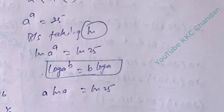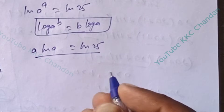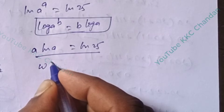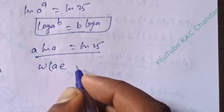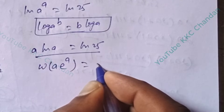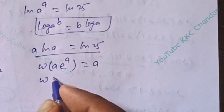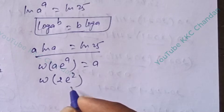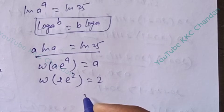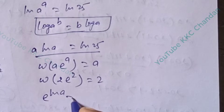In the next step, we apply the Lambert W function. We know that the W function satisfies: W(a · e^a) = a. For example, W(2 · e^2) = 2. Also, e^(ln a) can be written as a — this rule will be applied here.